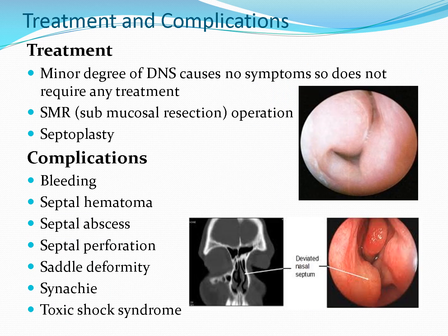If the patient comes with symptoms, treatment is given. If a deflected nasal septum is found incidentally with no symptom, no treatment is required. Treatment is mainly surgical. Two types of procedures can be performed: SMR (submucous resection) and septoplasty, done to prevent serious complications. Complications associated with these procedures include bleeding, septal hematoma, septal abscess, septal perforation, saddle deformity, synechiae, and toxic shock syndrome.